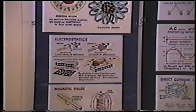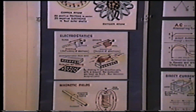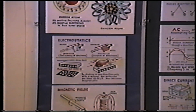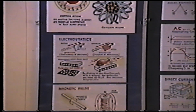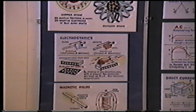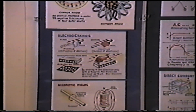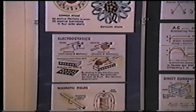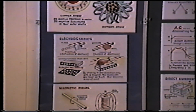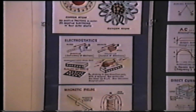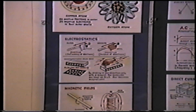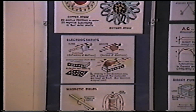Static electricity is a stripping of electrons from an insulator by friction, and is produced by rubbing. This can occur when a person walks across a carpeted room. The shock produced from touching a metal doorknob is from the electrons being removed by friction from the person's body while walking on the carpet.